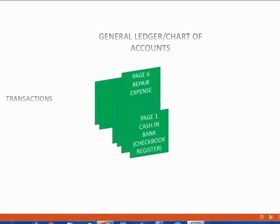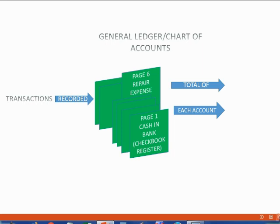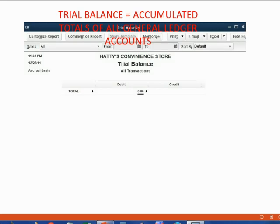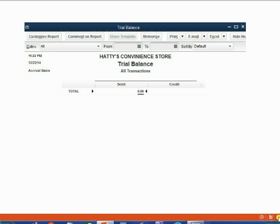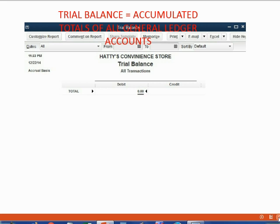We know from previous videos that transactions are recorded into the general ledger. That means that after we record the transactions in the register window, QuickBooks will automatically copy those transactions to the appropriate account in the chart of accounts that we created when we set up the file. After the transactions are recorded into the proper account, QuickBooks will make a special report that summarizes and organizes all of the accounts. QuickBooks automatically posts and copies the transactions to the appropriate account in the chart of accounts.